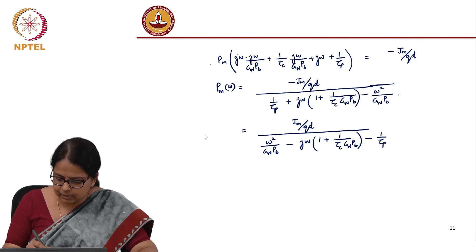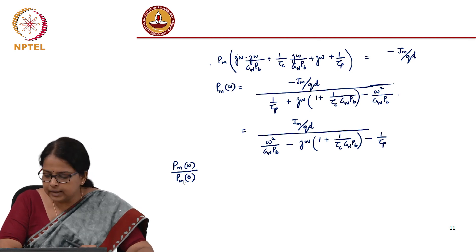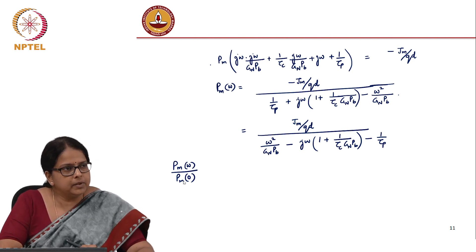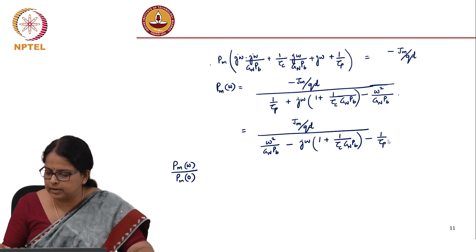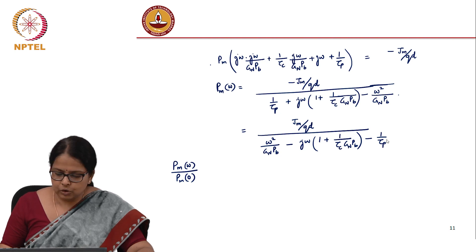Let us calculate what is p_m at omega divided by p_m at zero. When omega becomes zero, what is my response? This becomes zero, this becomes zero, it becomes just 1/tau_p.